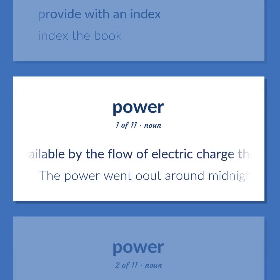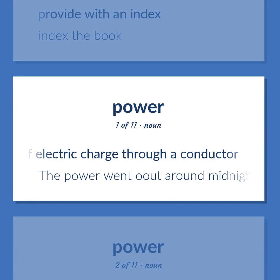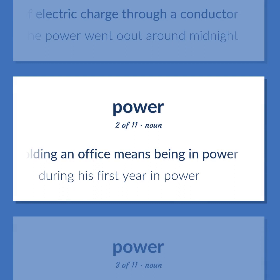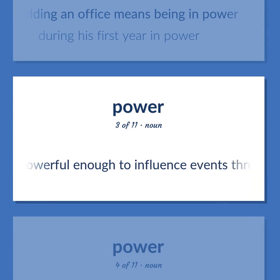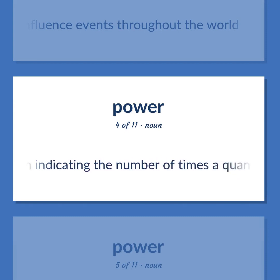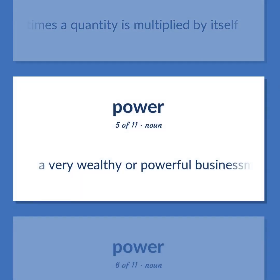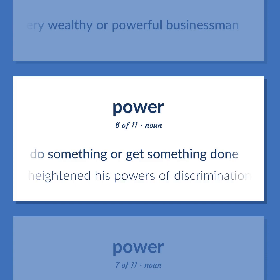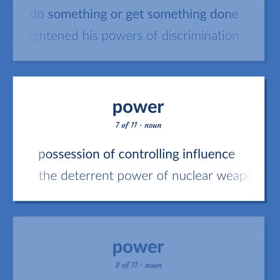Power: energy made available by the flow of electric charge through a conductor — the power went out around midnight. Of a government or government official, holding an office means being in power — during his first year in power. A state powerful enough to influence events throughout the world. A mathematical notation indicating the number of times a quantity is multiplied by itself. A very wealthy or powerful businessman.